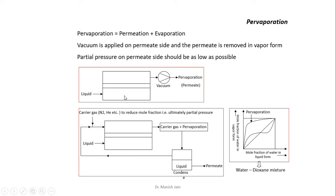Now suppose you have a type of mixture where the membrane is selective for the solute, not the solvent. Suppose you have a water-alcohol mixture and a hydrophobic membrane that is selective for alcohol, not water, and the concentration of alcohol in water is less than 1%. If that minute amount of alcohol is absorbed on the surface of the membrane and diffuses to the other side, it is very difficult to dissolve that minute amount of alcohol at the permeate side.